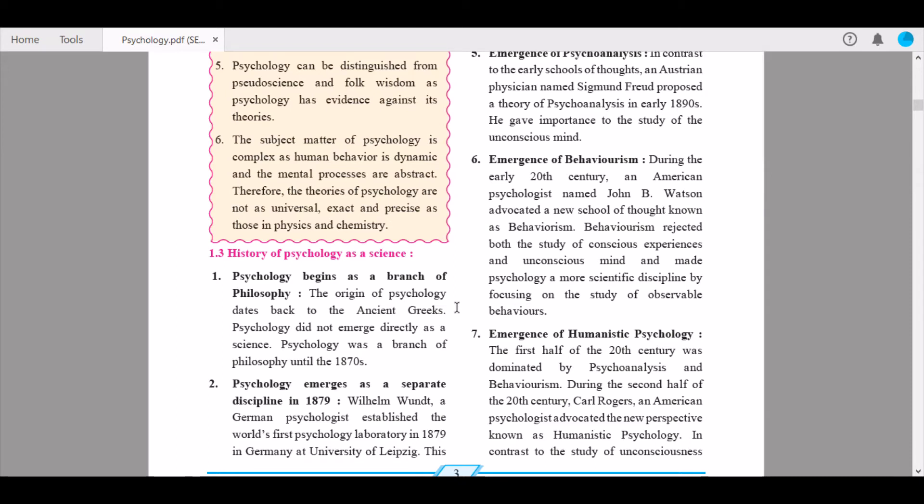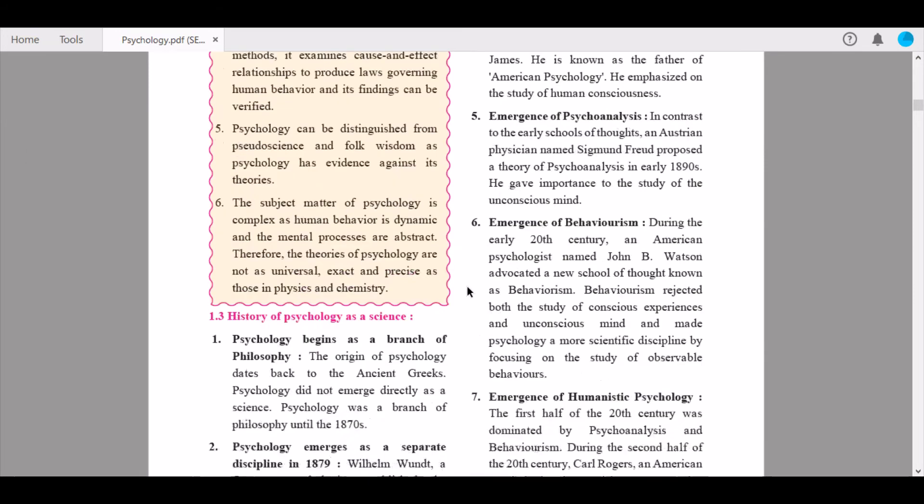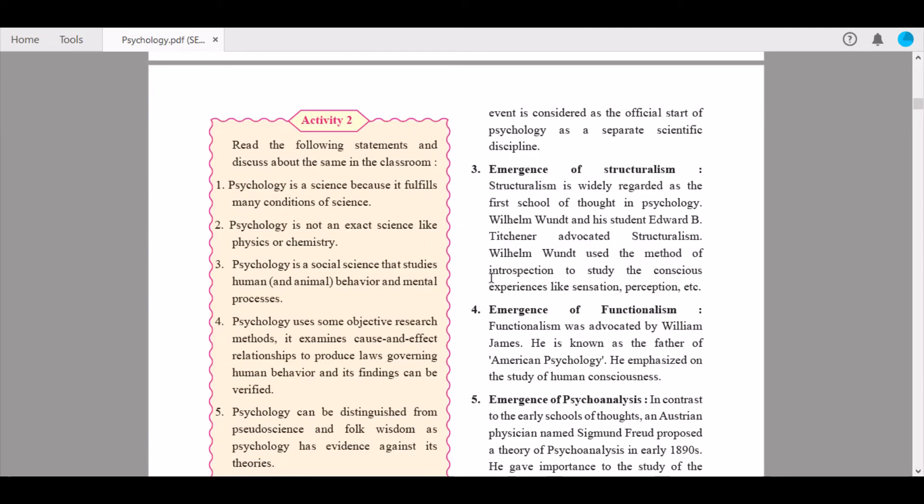Second, psychology emerges as a separate discipline in 1879. Wilhelm Wundt, a German psychologist, established the world's first psychology laboratory in 1879 in Germany at University of Leipzig. This event is considered the official start of psychology as a separate scientific discipline.